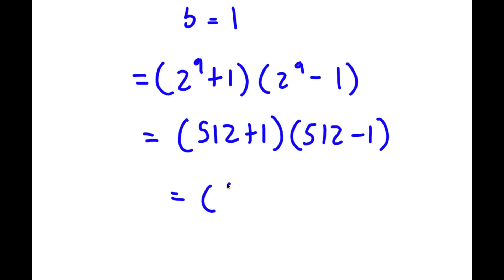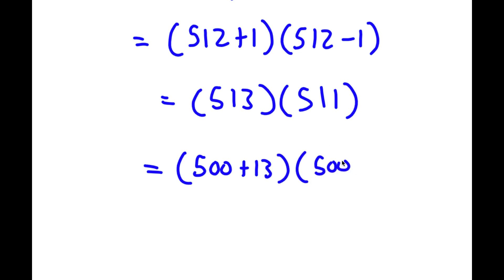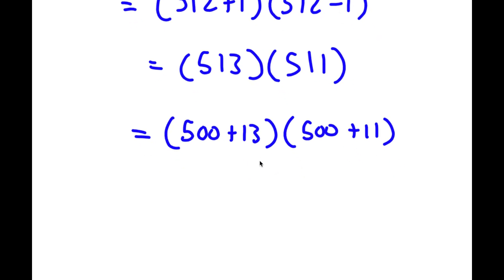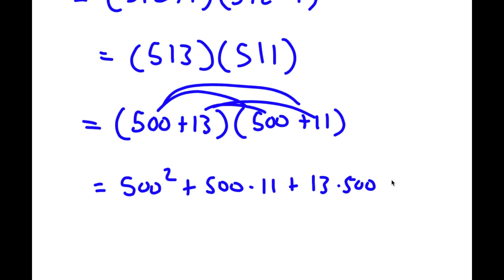512 plus 1 is 513, and 512 minus 1 is 511. So I have 513 times 511. To solve this, I'm going to rewrite both of these: 513 as 500 plus 13, and 511 as 500 plus 11. So now I have 500 plus 13 times 500 plus 11. Distributing, I get 500 times 500, plus 500 times 11, plus 13 times 500, plus 13 times 11.